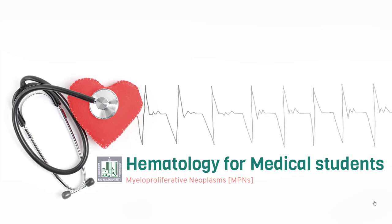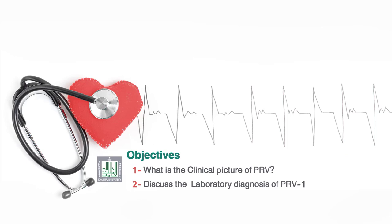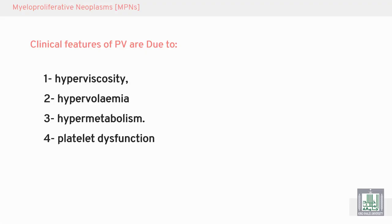In the name of Allah, the Most Merciful. We will continue in the MPNs. Clinical features of Polycythemia Vera are due to hyperviscosity, hypervolemia, and hypermetabolism — all of this due to increase in red cell mass.